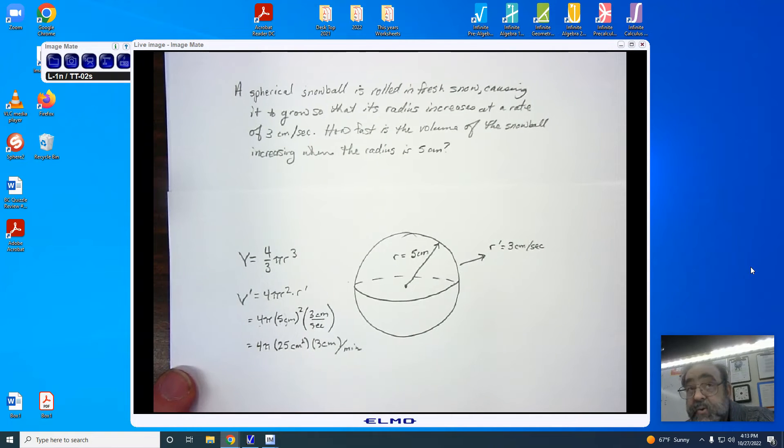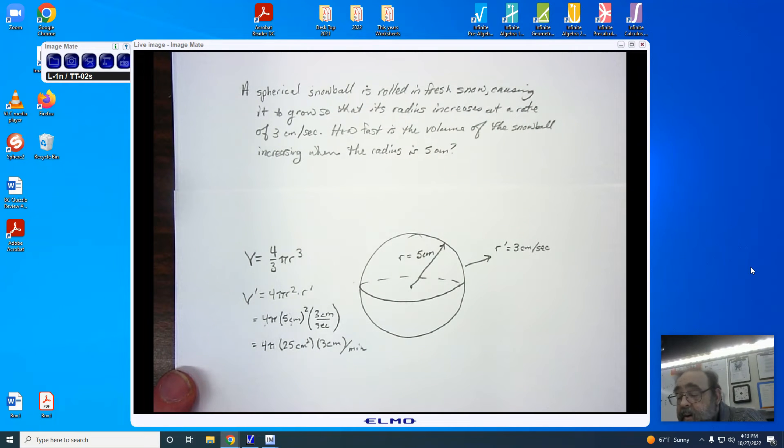So I now have 4 times 25, that gives me 100. 100 times 3 gives me 300, and so I now know that I have 300 pi, and this is centimeters squared times centimeters, gives me centimeters cubed, divided by minutes.